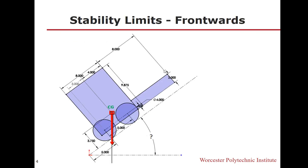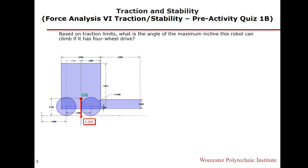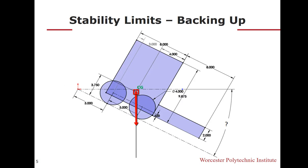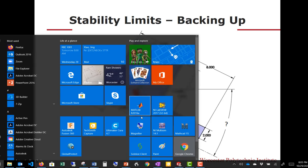We also want to talk about stability limits. If it's a four-wheel drive robot, you can figure out the traction limit—the maximum angle it could climb based on traction. But it could also be limited by tipping over before losing traction. We want to know the maximum angle we can climb based on stability, both forwards and backwards.